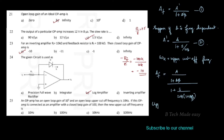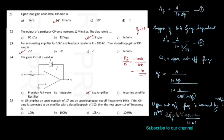The upper cutoff frequency is increased by a factor of (1 plus A·β). The new upper cutoff frequency ωhf equals ωh multiplied by (1 plus A·β). Similarly, the lower cutoff frequency is reduced by factor (1 plus A·β).